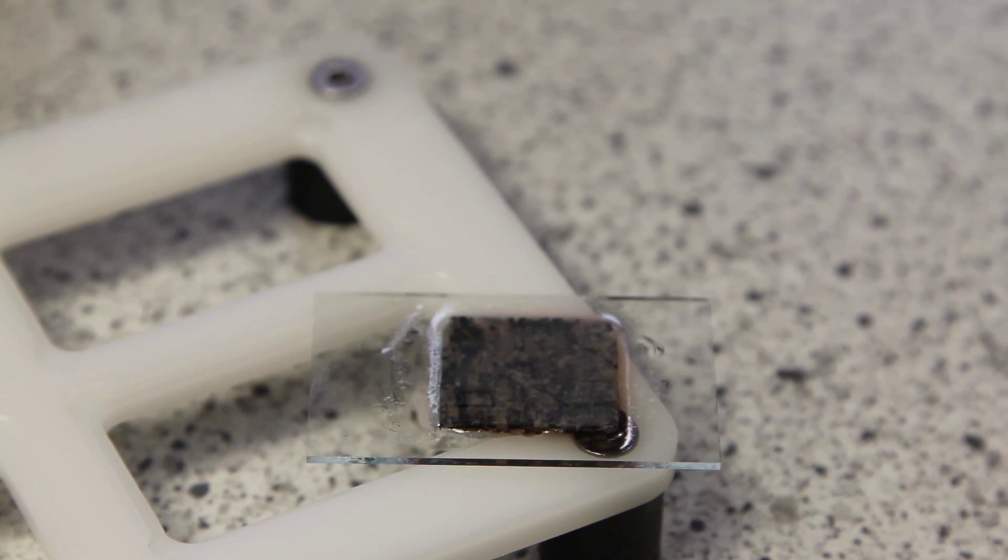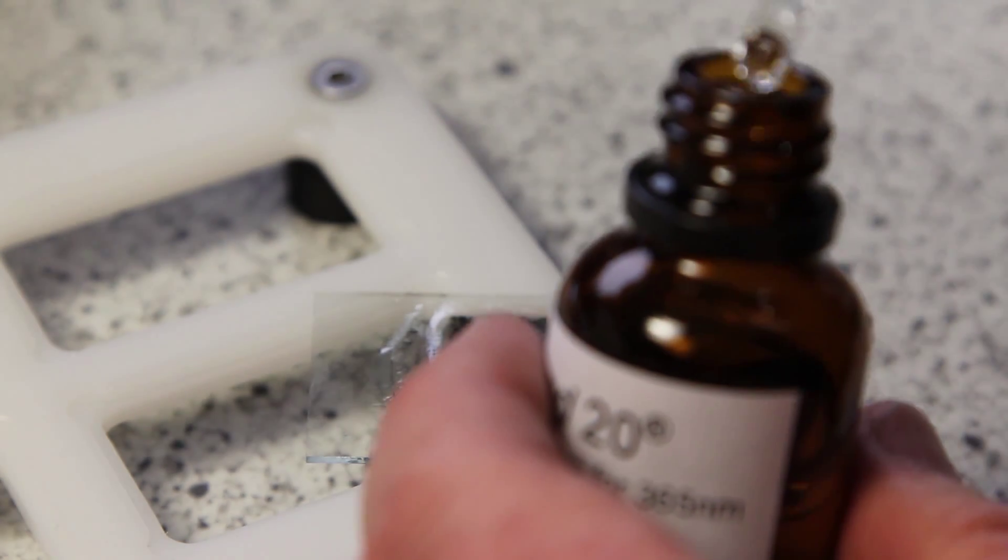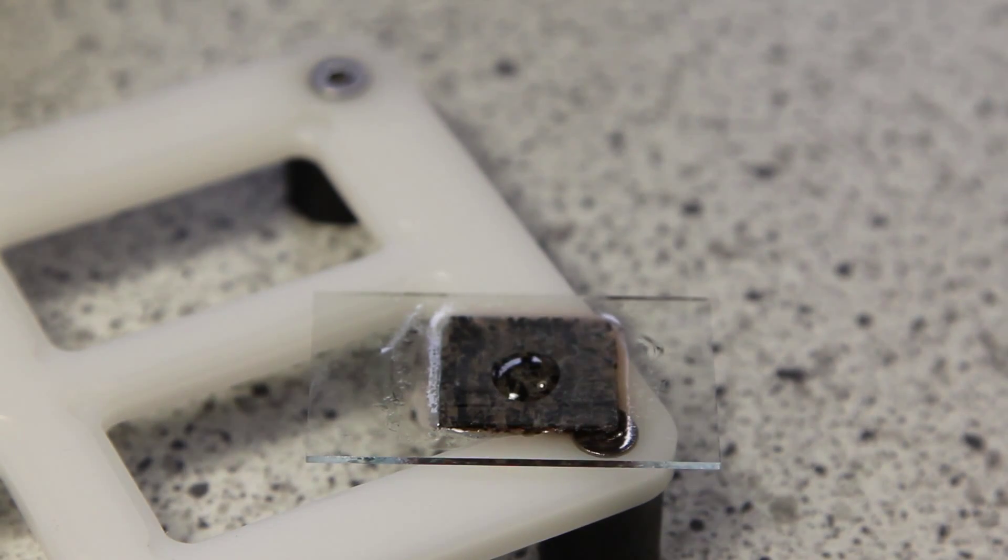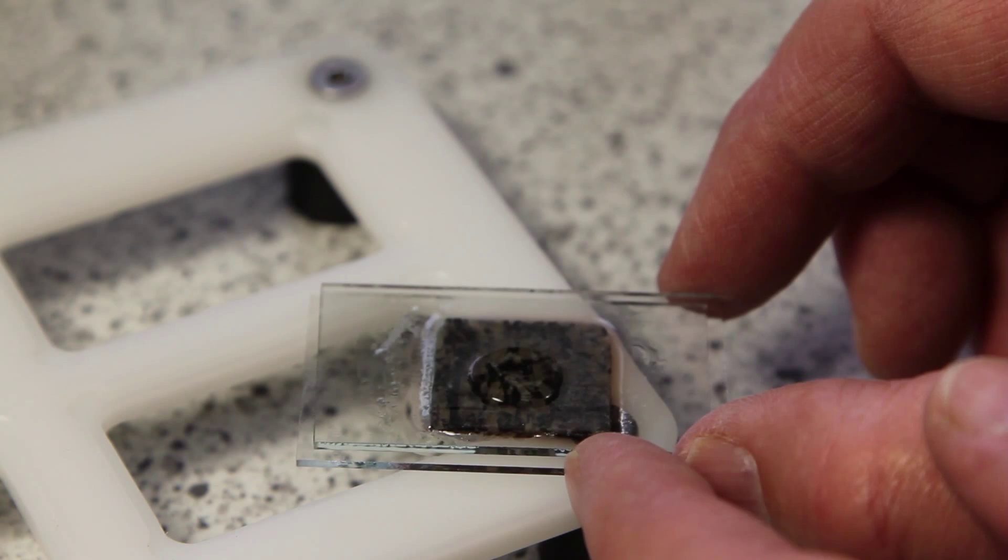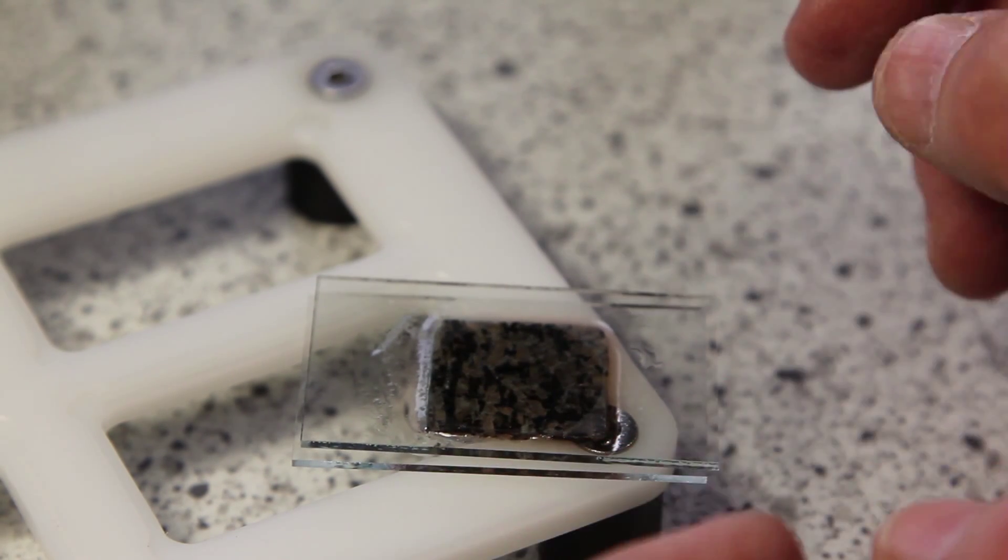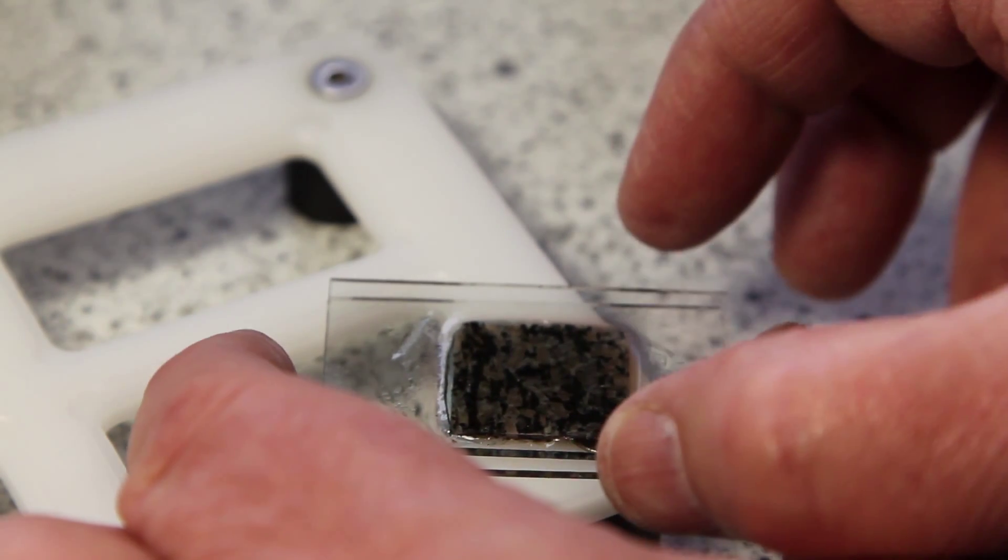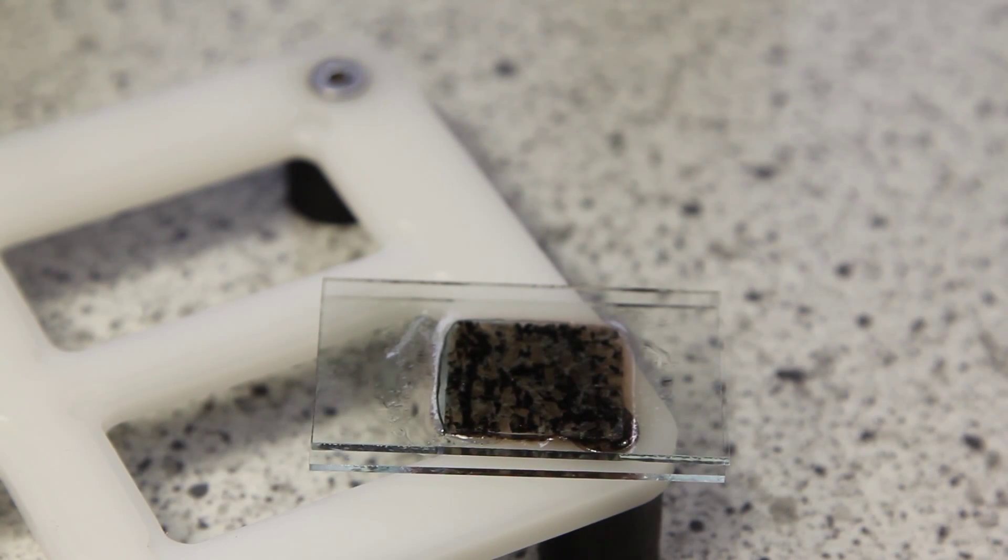Now I apply a drop of EpoSpeed 20 onto the sample and I put a cleaned slide on the sample. Carefully, do not include air. I watch if there is not any air on the glass.